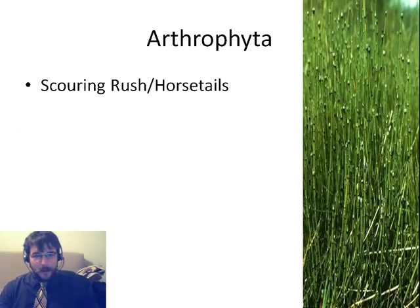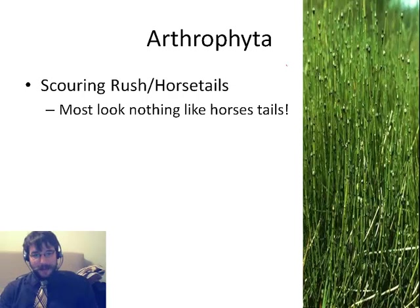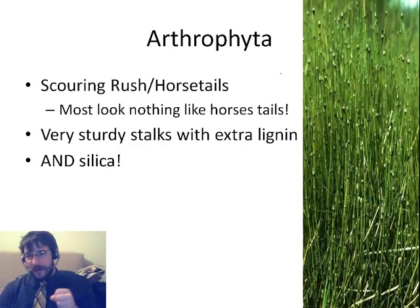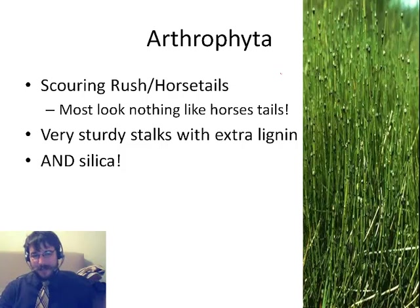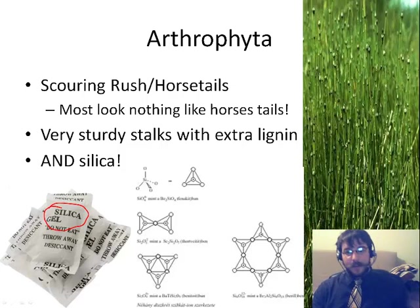Let's talk about the joint plants. There are two main groups: the scouring rush, which you can find all over Knox County, and the horsetails. Most of them don't look anything like horsetails. They're very sturdy in the stalk — they've got a whole bunch of lignin, but they also have silica crystals. Silica is SiO₂ — this is what quartz, sandpaper, and glass are made out of. So these things are super, super hard. That silica is on the outside of the horsetails and the scouring rush.